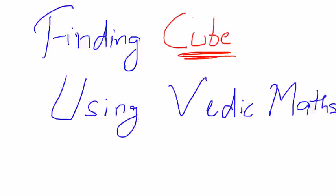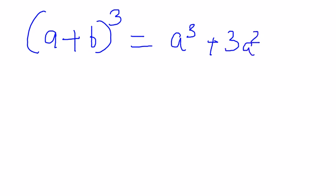Before getting started, let me ask you how many of you remember the formula a plus b the whole cube. I guess all of you might be remembering this. If you remember this the work is done. So what was it? a cube plus 3a square b plus 3b square a plus b cube.